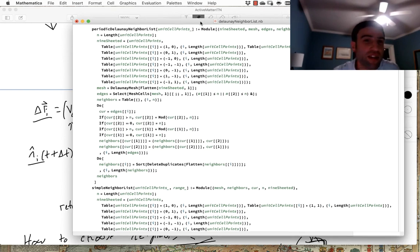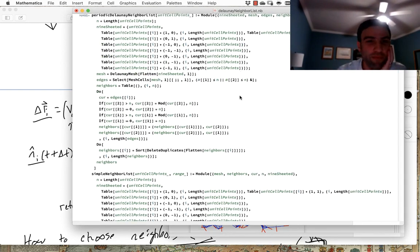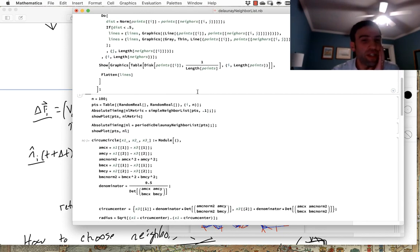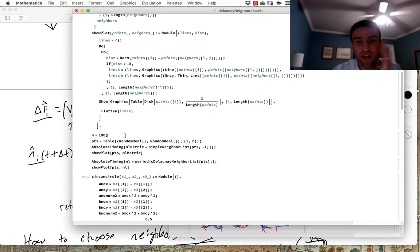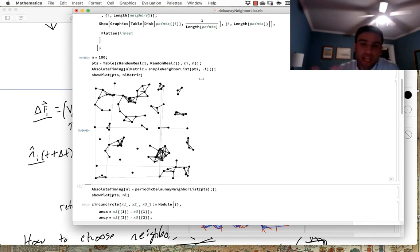So I just went ahead and wrote a few quick scripts to construct these different types of neighbor lists and visualize them in a simple way. For instance, let's just see what it looks like if we take 100 particles and just throw them in a box with periodic boundary conditions and construct neighbor lists in one of two different ways. So in this first way, I'm doing a very standard, hey, any particle that's within some specific distance, and here I've chosen something like a tenth of the length of the box in each dimension.